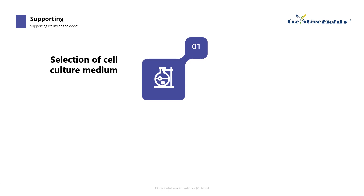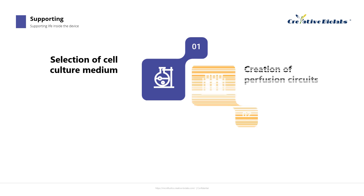Once this criterion is met, we can consider the suitability of the media to support downstream detection without causing unnecessary interference. When optimizing co-culture media for OOC applications, many research groups have employed various mixtures of the original culture media for each cell type and achieved relatively good results. Media perfusion is a hallmark of OOC equipment and serves as a simulation of the circulatory system, maintaining concentration gradients for the convective transport of nutrients and waste. Various pumps have been adapted for OOC applications to drive media perfusion through OOC devices.